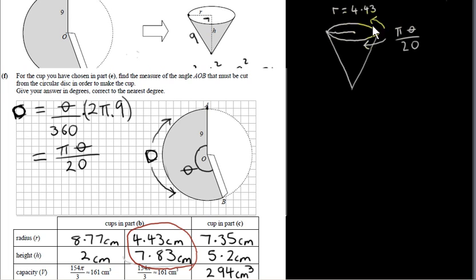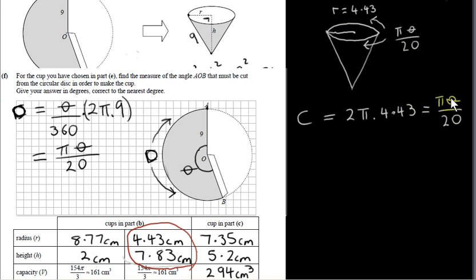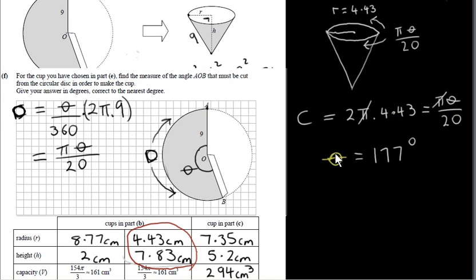This arc length D must equal the circumference of the cup's opening. The circumference of the opening is 2π times the radius 4.43. Setting 2π times 4.43 equal to pi times theta over 20, we divide both sides by pi and multiply both sides by 20. This gives theta equals 20 times 2 times 4.43, which to the nearest degree is 177 degrees. So the angle AOB is 177 degrees.